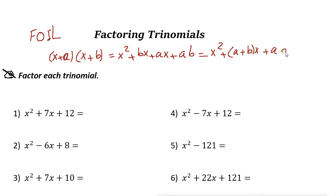Now for the inner and outer terms, if you factor out x, you can write it as x squared plus (a + b)x plus ab. So if you have a trinomial like this, you can write it as (x + a) times (x + b). You can also use the method of difference of squares.